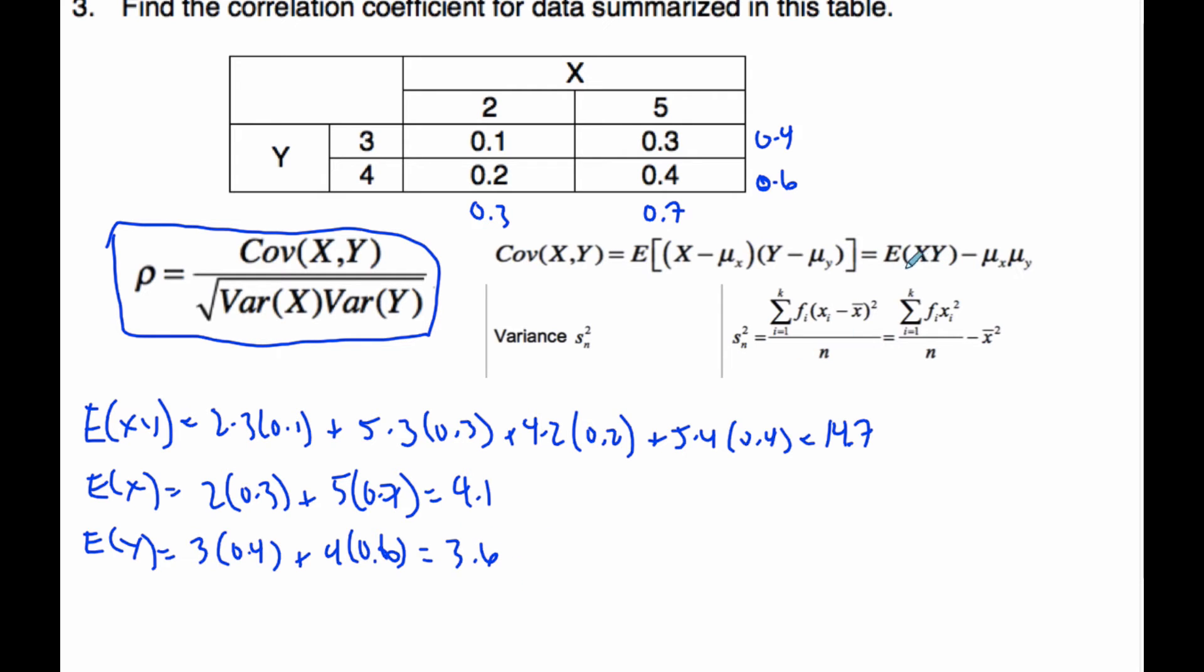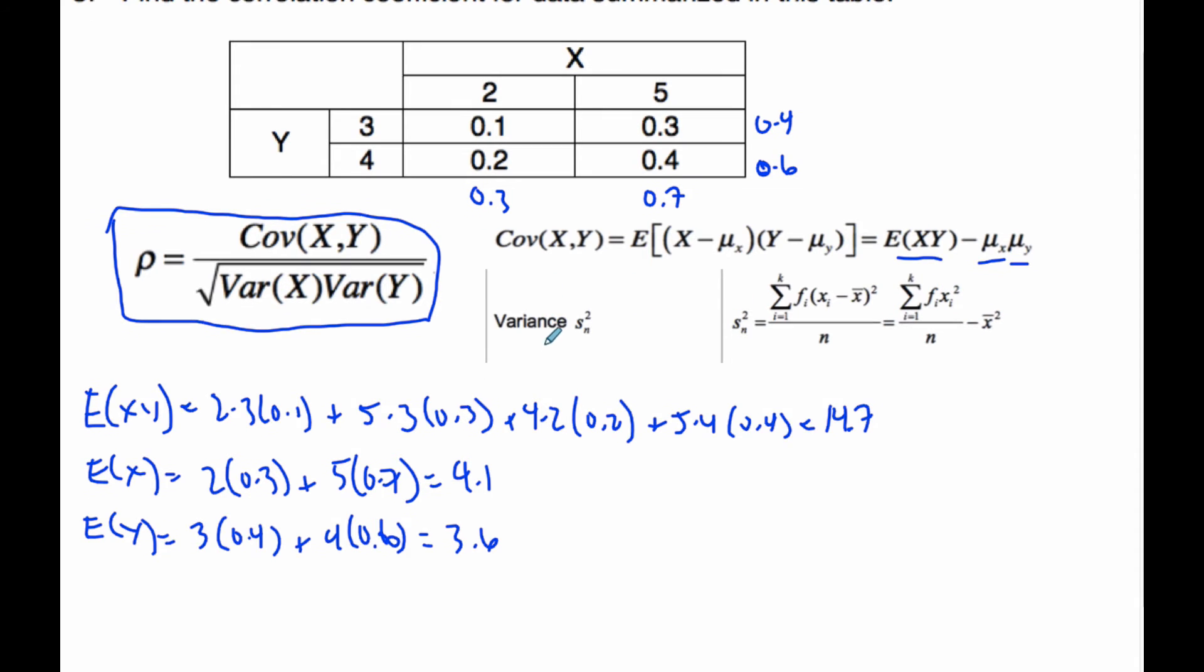Now I have this part, this part, and this part of the covariance—that's the top. Next, I need the variance of X and the variance of Y. Here's my variance formula.